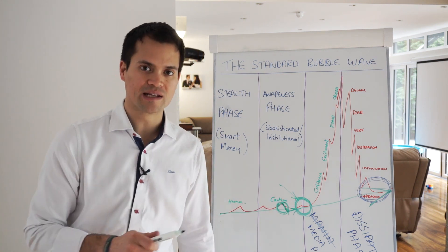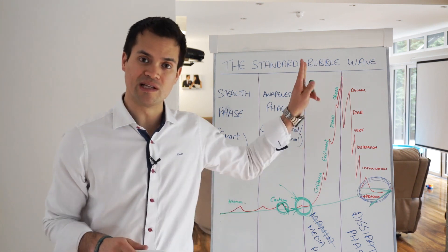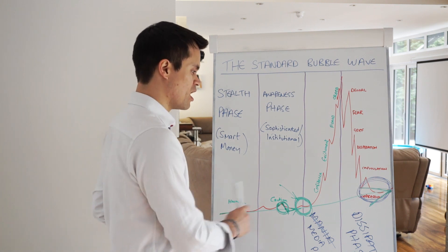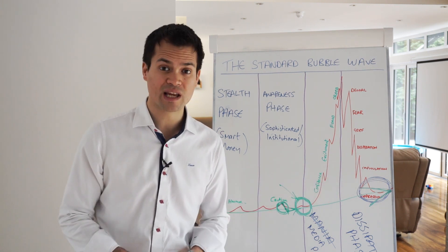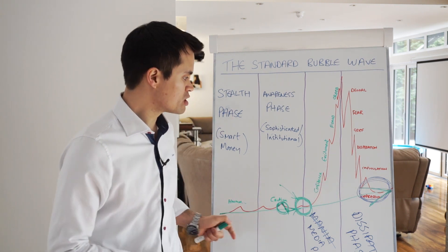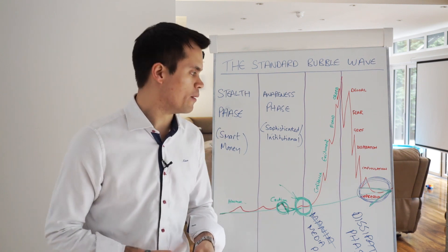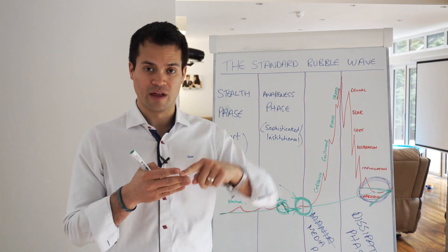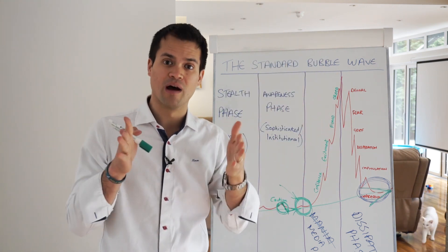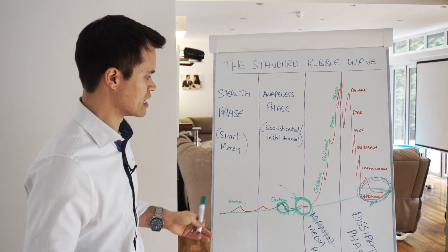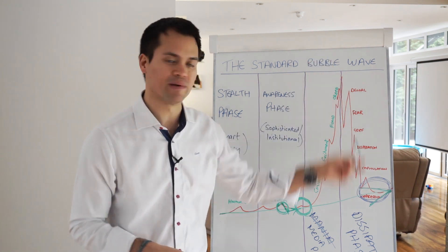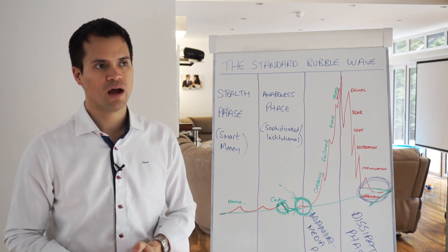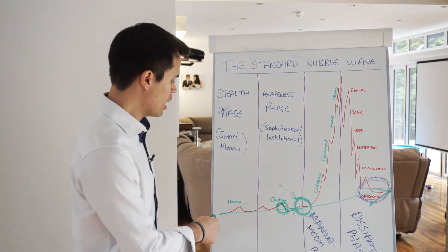Assets move at different speeds up and down this standard bubble wave. With cryptos, if you took the tech bubble from sort of start till finish, it took maybe six years. With cryptos, it's probably going to be about three years. What tends to happen, especially with tech ones, is that the height doubles and the time halves. So cryptos is racing up and down this standard bubble wave.